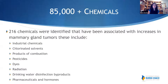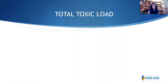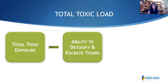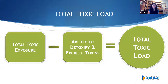We know there are 85,000 chemicals, and 216 of them have been identified with mammary gland tumors — spanning industrial chemicals, pesticides, dyes, drinking water contaminants, and pharmaceuticals and hormones in drinking water. The total toxic load we're exposed to, combined with our ability to detoxify and excrete toxins, determines our overall toxic burden. The good news is that studies show just eating an organic diet and increasing fruits and vegetables can bring levels of many chemicals down — the body is amazingly resilient.